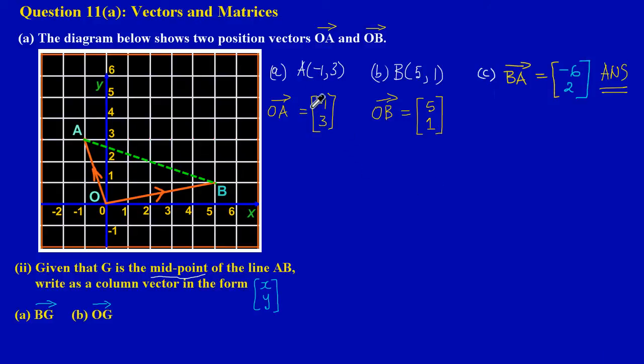In the previous video, in question 11a part 1, we had looked at finding the column vectors for OA, which is [-1, 3], and in part B, OB equals [5, 1], and in part C, BA equals [-6, 2]. I've just made note of the answers from that video so that just in case we need to use any of them, we have them at our disposal now.